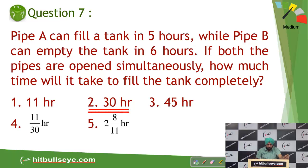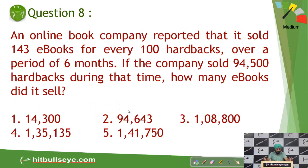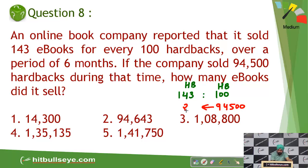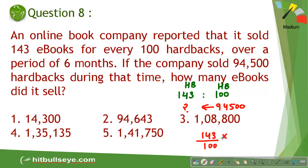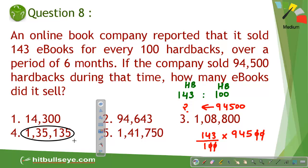Moving on — this is a wonderful question. The ratio of 143 ebooks to 100 hardbacks is given, and the company has sold 94,500 hardback copies. To find the ebooks sold: 143 divided by 100 multiplied by 94,500. You can cancel two zeros. The unit digit of the answer will end in 5, and there is only one option with this unit digit, so that option becomes your answer.